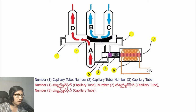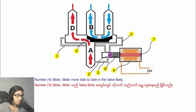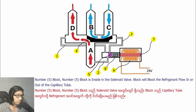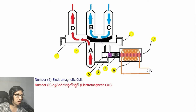Number one: capillary tube. Number two: capillary tube. Number three: capillary tube. Number four: slider — the slider moves side to side in the valve body. Number five: block, which is inside the solenoid valve; the block controls the refrigerant flow in or out of the capillary tube. Number six: electromagnetic coil. Number seven: magnet. Number eight: spring.